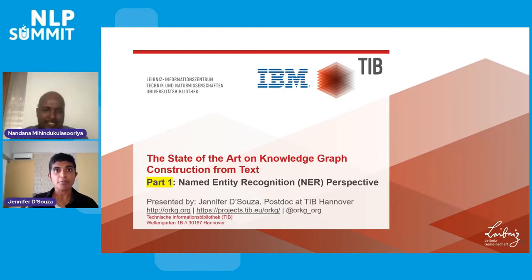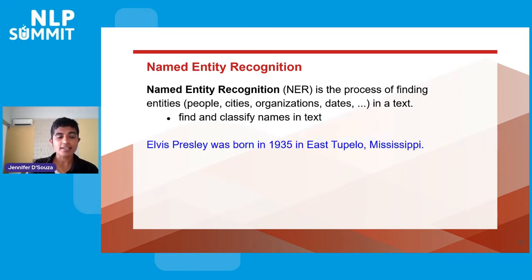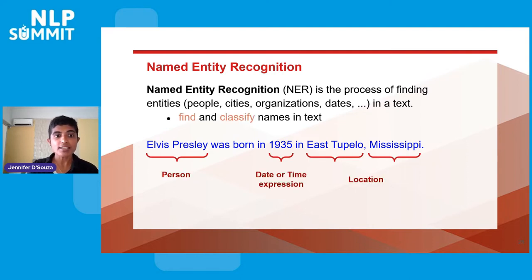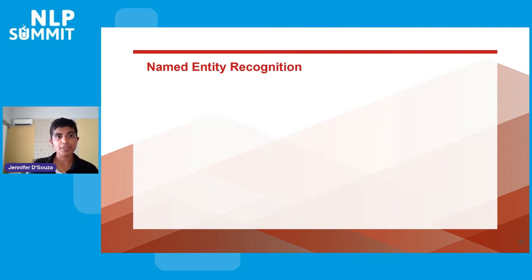I will begin with part one of our joint presentation: the named entity recognition perspective reflecting on the state of the art on knowledge graph construction from text. Named entity recognition, NER, is the process of finding entities — people, cities, organizations, states — in a text. Given a sentence, we want to find named entities and classify them into predefined types. This classification can be done at different levels of granularity, such as classifying location further into city and state.